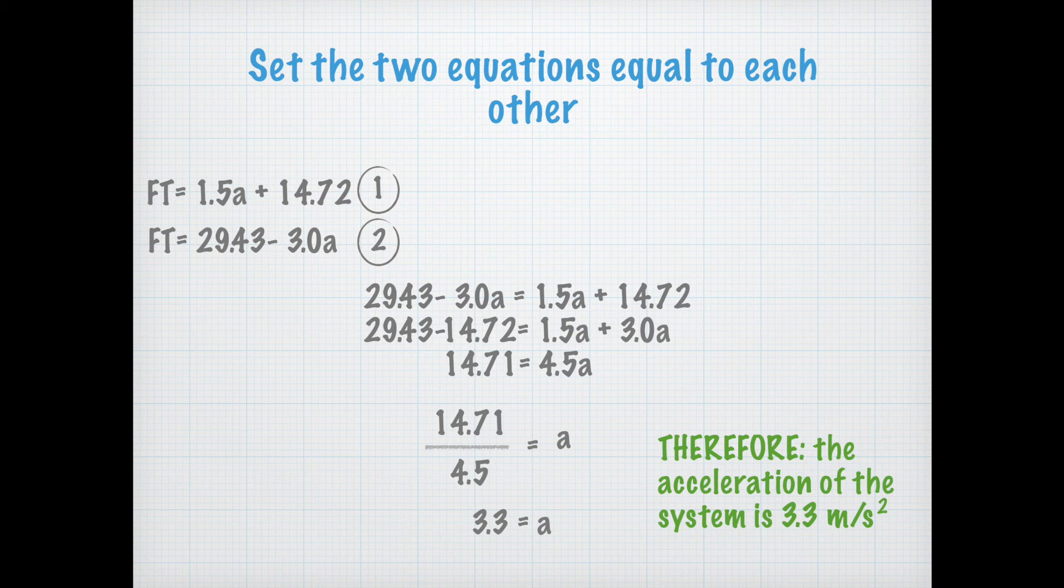And when we isolate for a, we divide 14.71 by 4.5 giving us 3.3. Therefore, the acceleration of the entire system is 3.3 meters per second squared.